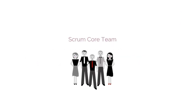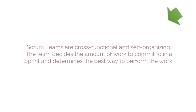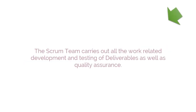Scrum Core Team. The Scrum Team, also referred to as the Development Team, is a team which is responsible for estimating user stories and delivering the project deliverables. Scrum Teams are cross-functional and self-organizing. The team decides the amount of work to commit to in a sprint and determines the best way to perform the work. The Scrum Team carries out all the work related to development and testing of deliverables as well as quality assurance.